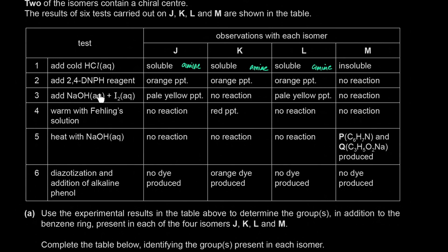The third test is alkaline aqueous iodine — sodium hydroxide and aqueous iodine. This test works for a methyl ketone group (CH3CO) or a methyl alcohol (CH3CHOH). Since we already identified that J and L have a carbonyl group, we know this is a methyl ketone — specifically a CH3CO group. So both J and L have a methyl ketone.